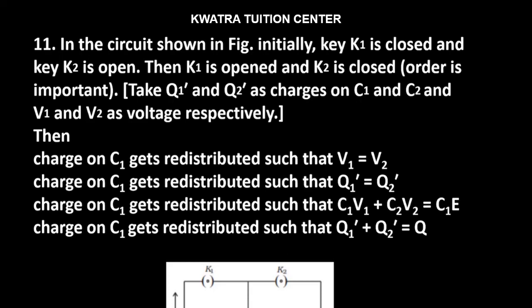Hello everyone, let's start with question number 11. It says in the circuit shown in figure, initially key K1 is closed and key K2 is open. Then K1 is opened and K2 is closed. Order is important. Take Q1' and Q2' as charges on C1 and C2, and V1 and V2 as voltage respectively. So here we have some information and according to that information, we have to check our answers.